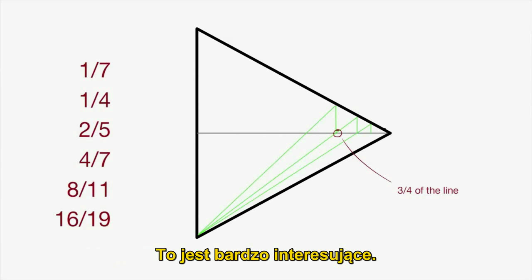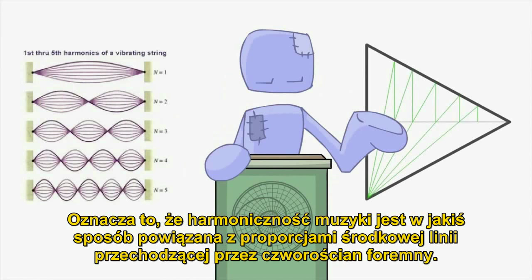This is very interesting. It means that the harmonics of music are somehow related to the proportions of the central line moving through a tetrahedron.